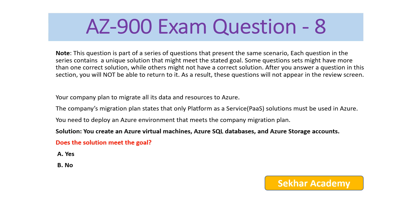AZ-900 exam question number eight. The scenario is the same — your company plans to migrate all data and resources to Azure using only PaaS solutions. The proposed solution is: you create Azure virtual machines, Azure SQL databases, and Azure Storage accounts. All of these come under IaaS solutions, so the solution does not meet the goal. The right answer is B: No.